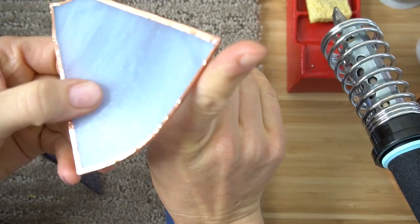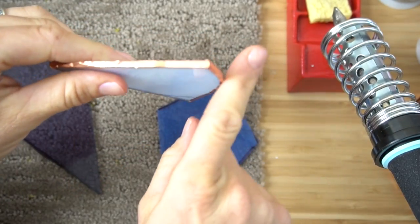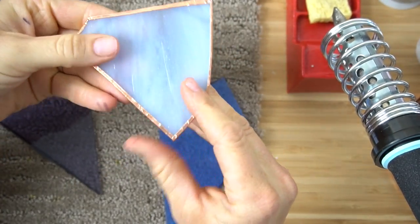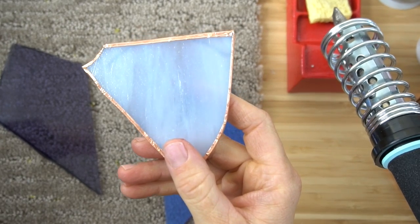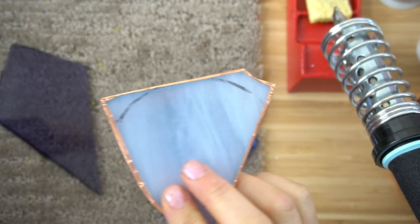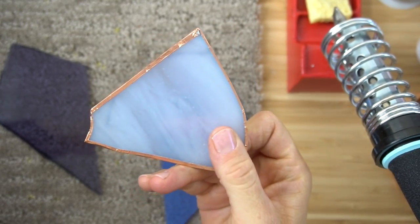Sometimes your glass will cut at an angle for some reason, and that sometimes makes it just a little bit harder to get that copper foil around evenly. But try as hard as you can.